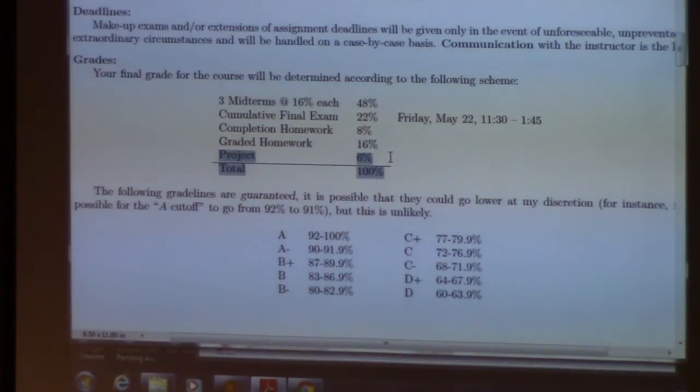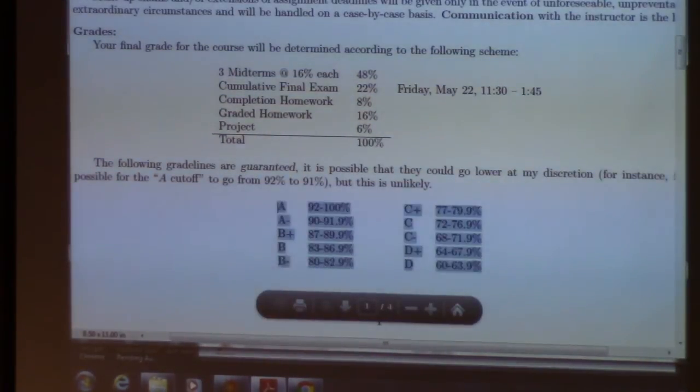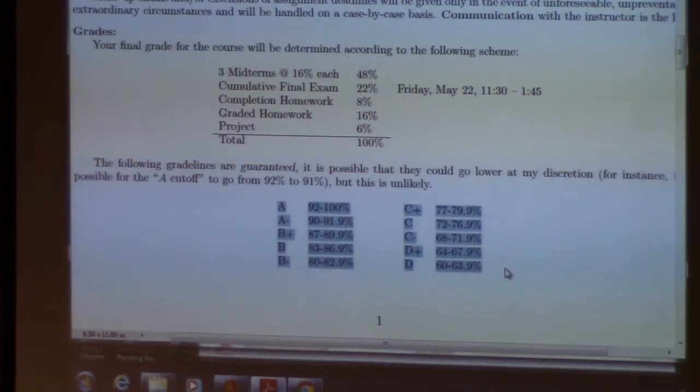There will be one project, it will be worth 6% of the grade, and I do believe these all add to 100%. And here are the grade lines that I use. These are guaranteed. Could they change at all? Possibly, but not usually. What might cause me to change them might be if there is one or two tests that seems especially difficult for people as a class, not just for a few people here and there, but overall as a class.